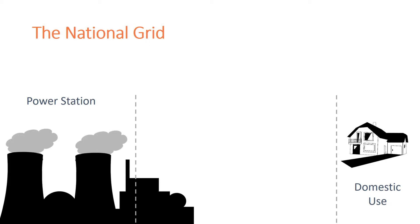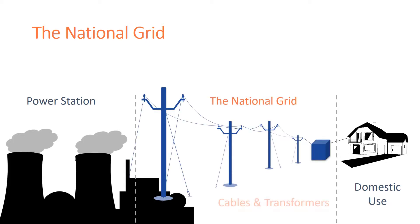The National Grid is a system of cables and transformers that link power stations to consumers. Electrical power is transferred from power stations to consumers using the National Grid.